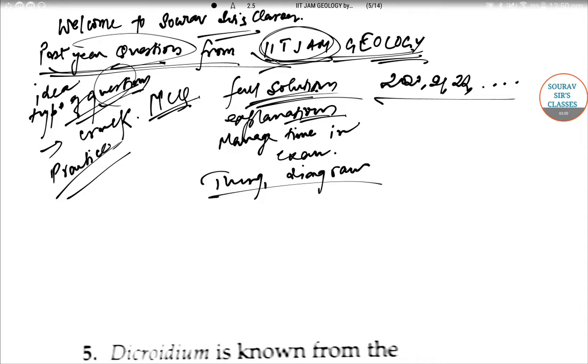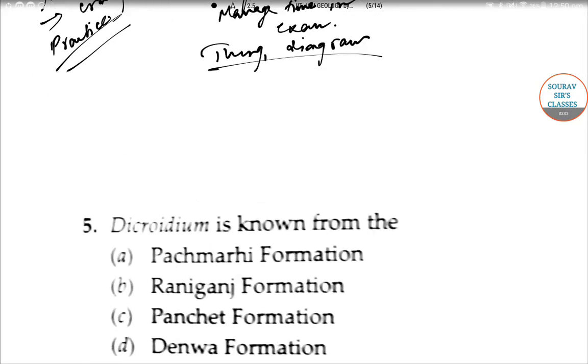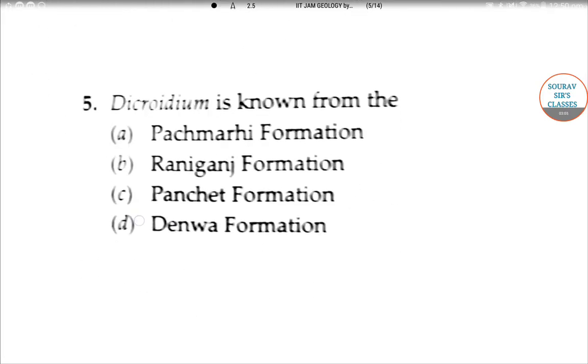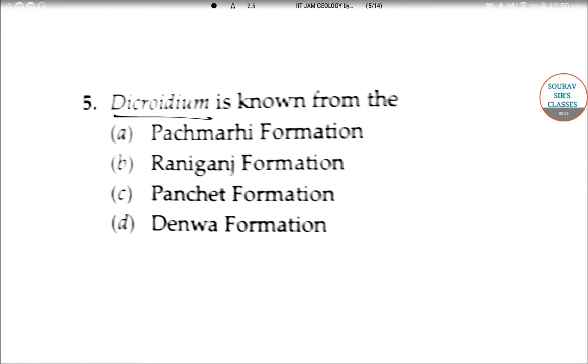The first question which we are going to solve today is on your screens now. Decroidium is known from the - what? Panchamadi formation, Rani Ganj formation, Panchet formation, or Denwa formation?